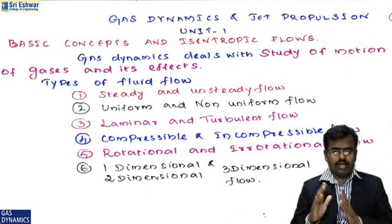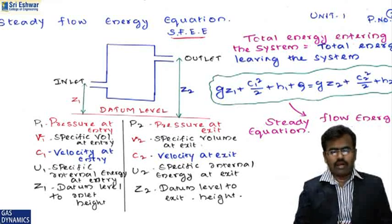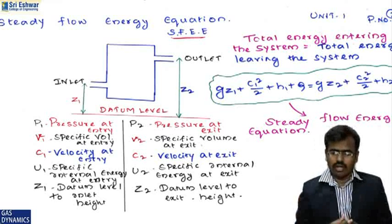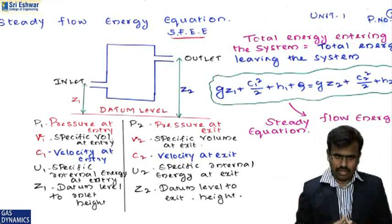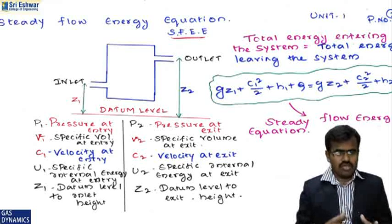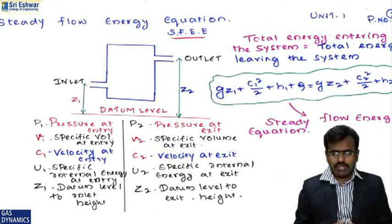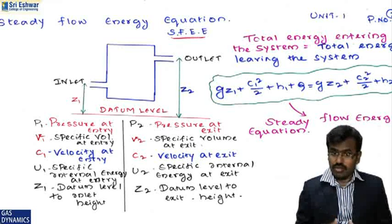For this subject we are going to focus on the fourth category: compressible and incompressible flow. We have one derivation — the steady flow energy equation. The final equation is: g·z1 + c1²/2 + h1 + q = g·z2 + c2²/2 + h2. It states that the total energy entering the system equals the total energy leaving the system.